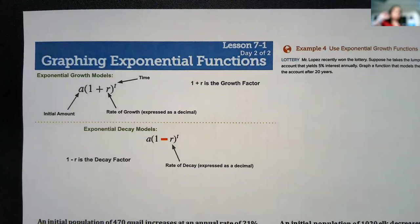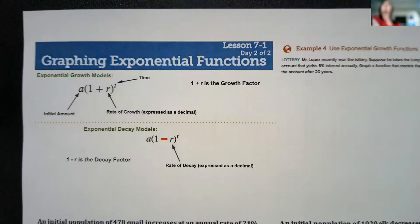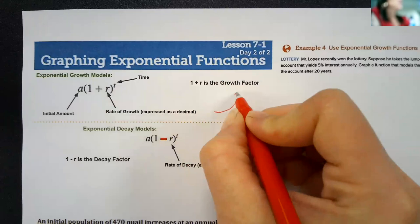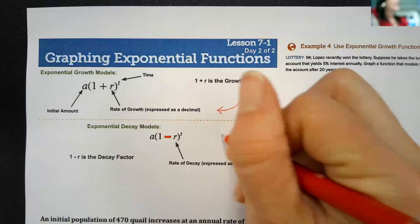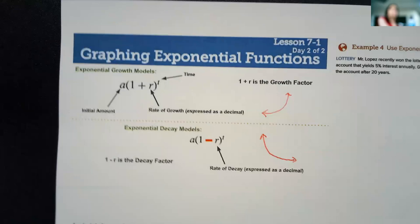7-1 day 2. Yesterday and in the last lesson, we did graphing exponential functions. We talked about exponential growth. This one's talking about exponential growth, and that means it would graph like this. And then we talked about exponential decay. That would go along with this graph. It would look like this, where it starts high and then comes down.